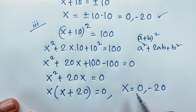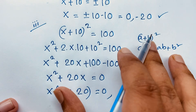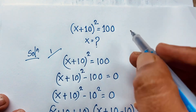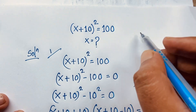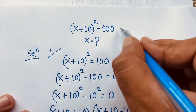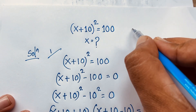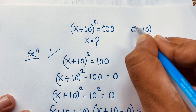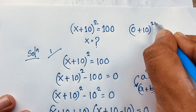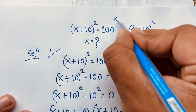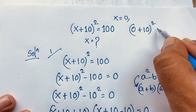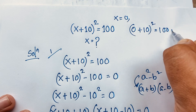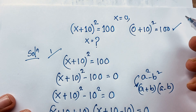So our final answer is x = 0 and x = −20. Let's verify. First for x = 0: (0 + 10)² = 100. Left-hand side and right-hand side are both equal.